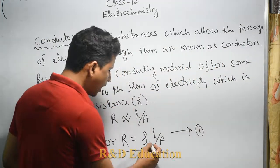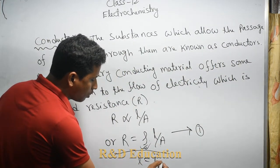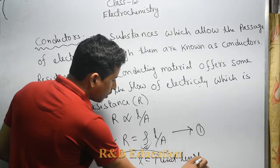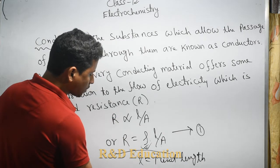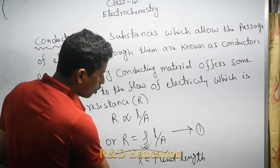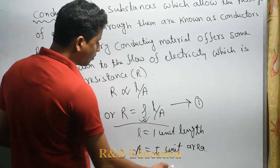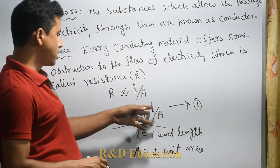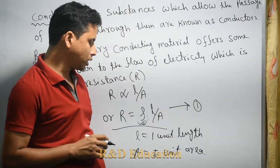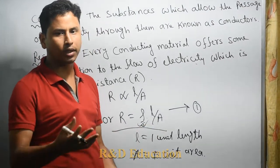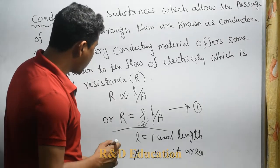We have to consider one unit length and one unit cross-sectional area. For example, length of one centimeter and cross-sectional area of one centimeter square.